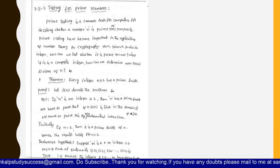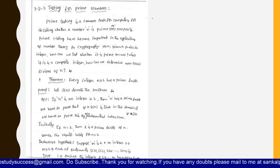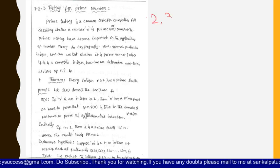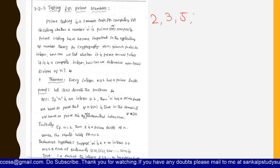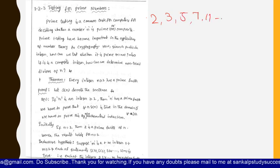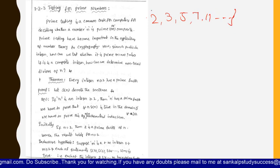Some examples of prime numbers are 2, 3, 5, 7, 11, and so on.